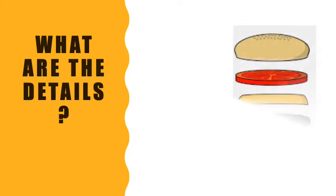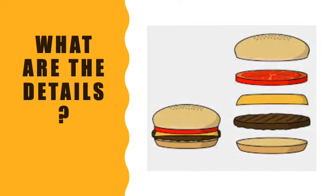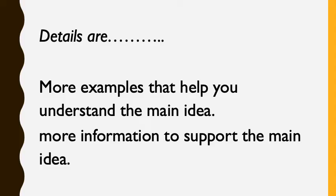Now let's think — what are the details of this paragraph? What else do we know about Sally going shopping? Where are all the ingredients that make the cheeseburger interesting? Details are more examples that help you understand the main idea — more information to support the main idea.